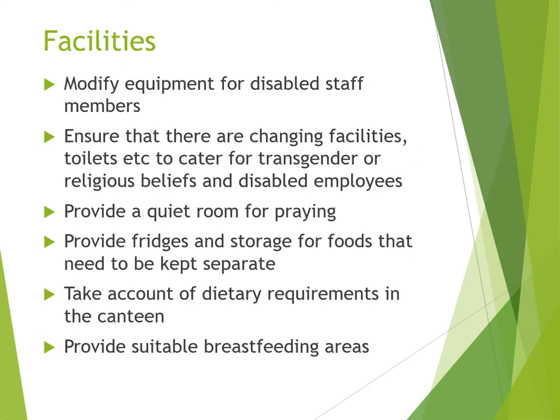As far as facilities are concerned, organisations should modify equipment for disabled staff members, ensure there are changing facilities and toilets catering for transgender individuals, religious beliefs, and disabled employees. A quiet room should be provided for prayer. Fridges and storage should be provided for foods that need to be kept separate — for example, kosher from non-kosher. Dietary requirements in the canteen should be catered for, and breastfeeding areas should be provided for women who need them.